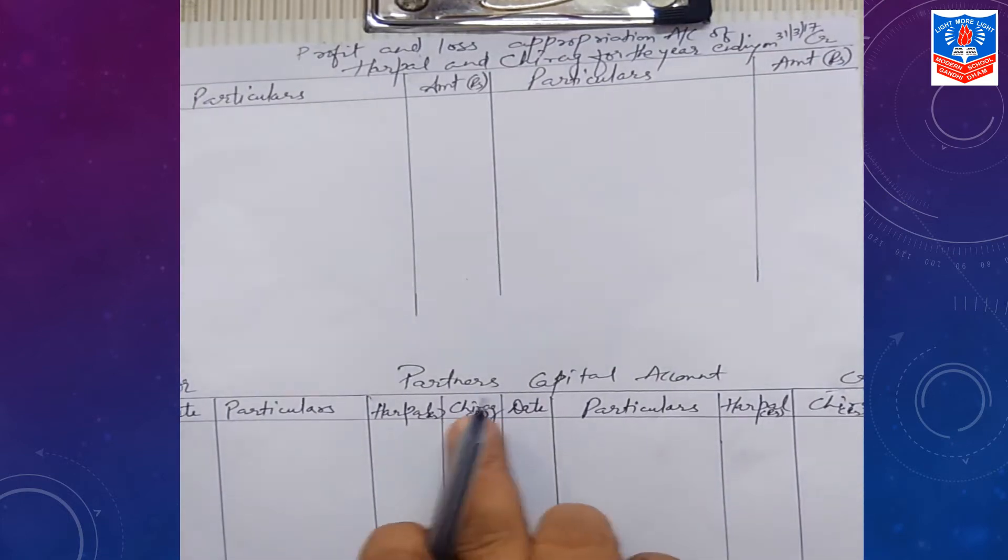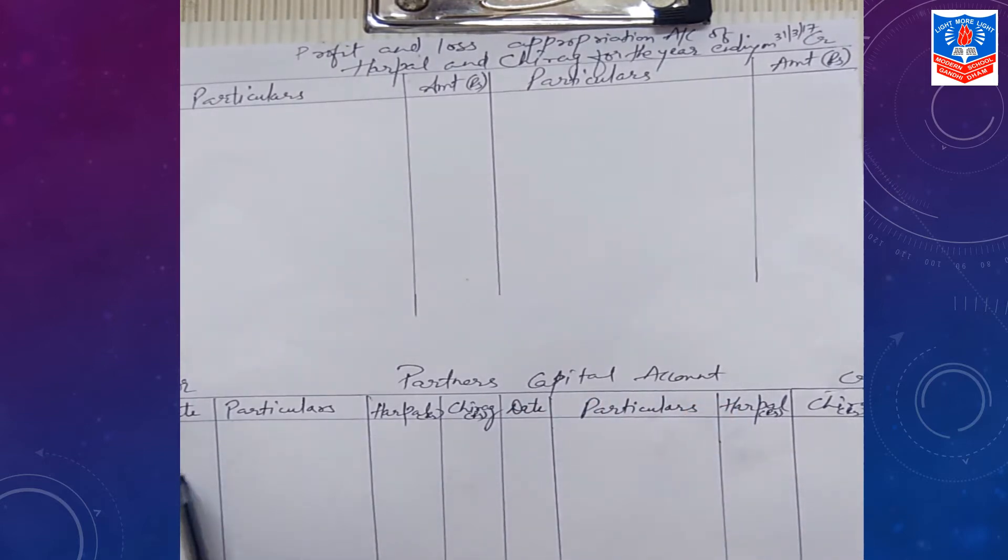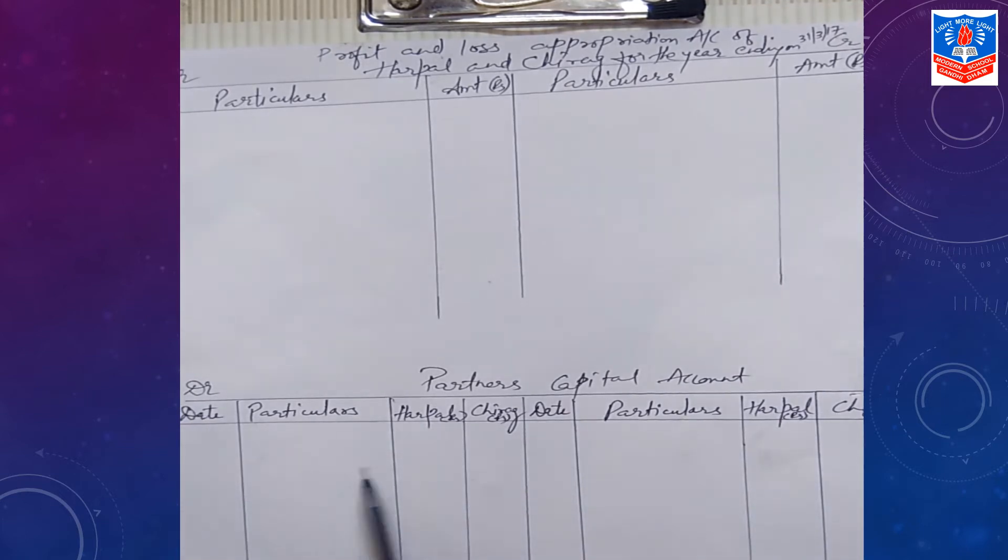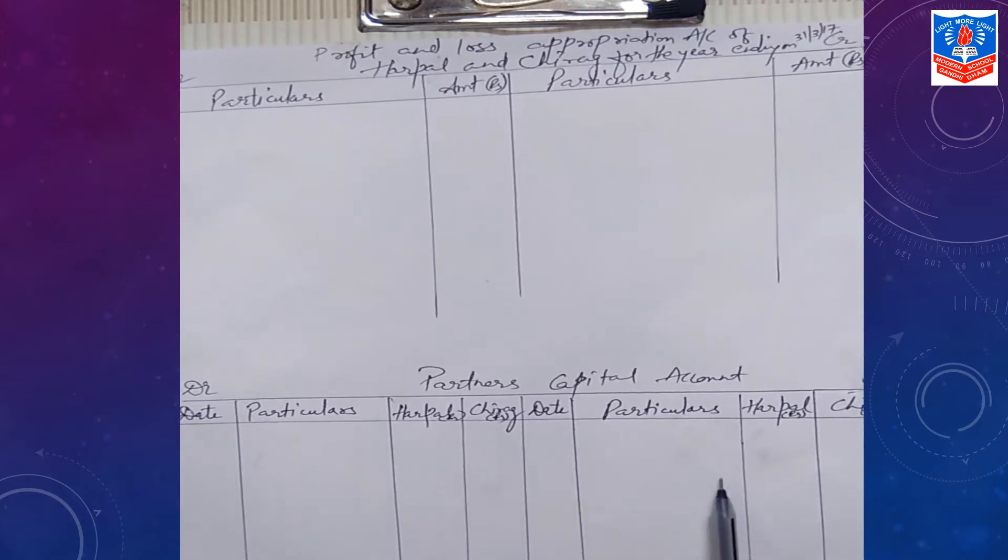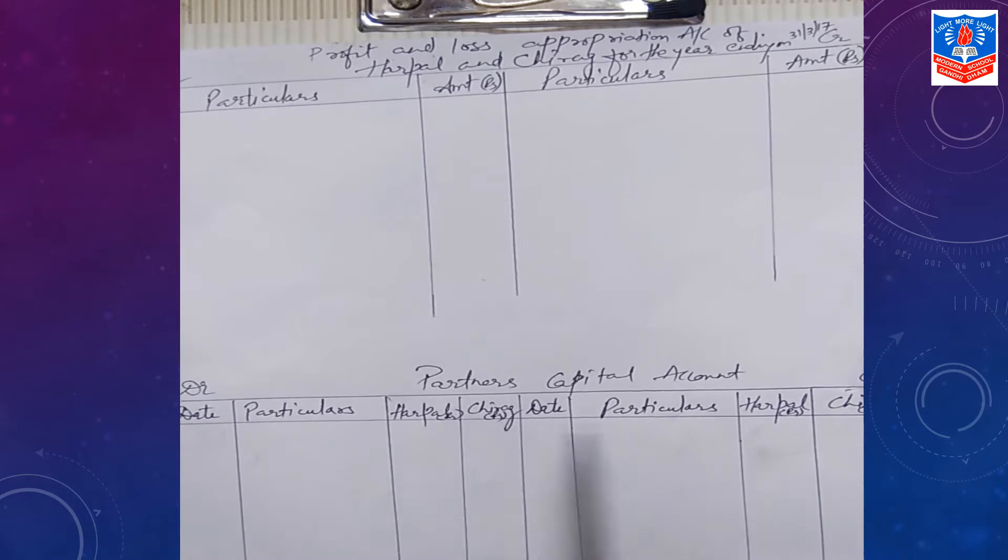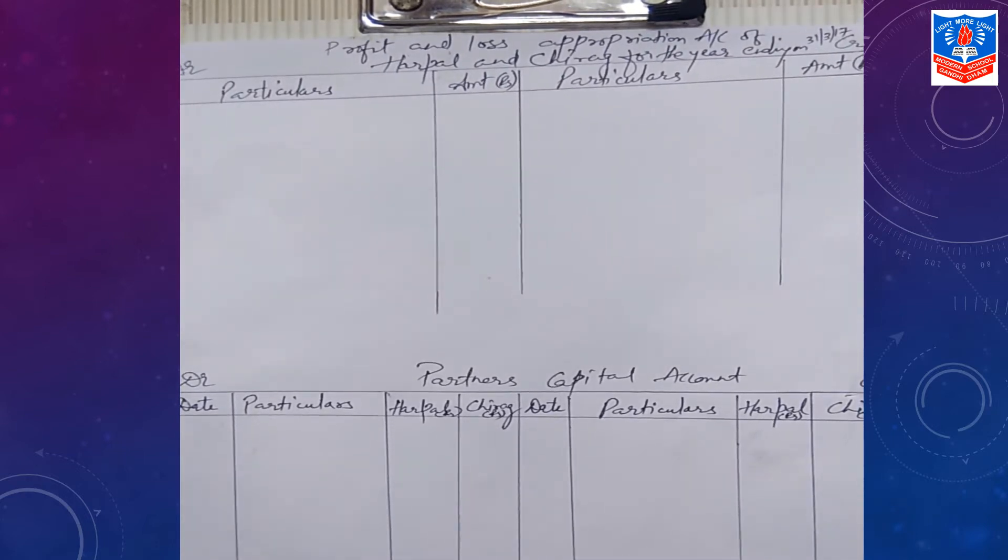Go for format of partner's capital account. Two partners are there. Debit side, credit side, date, particulars, Harpal, Chirag. Then date, particulars, Harpal, Chirag. This represents amount in rupees. These columns are for amount in rupees. Let us start up with the question.